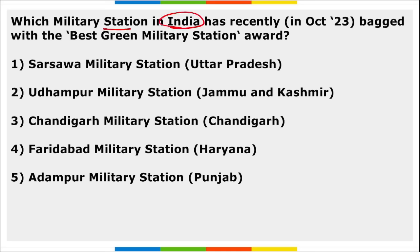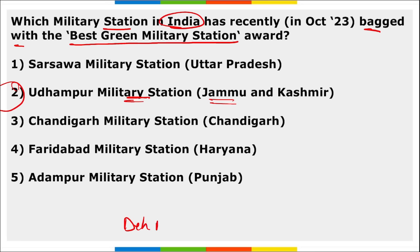Next, which military station in India recently received the Best Green Military Station Award? It is Udhampur Military Station in Jammu and Kashmir. It was awarded the Best Green Military Station Award — recognizing the station's environmental efforts and highlighting the Indian Army's commitment to excellence. During the award ceremony, Dehradun Military Station in Uttarakhand was acknowledged for securing the title of second best green military station.